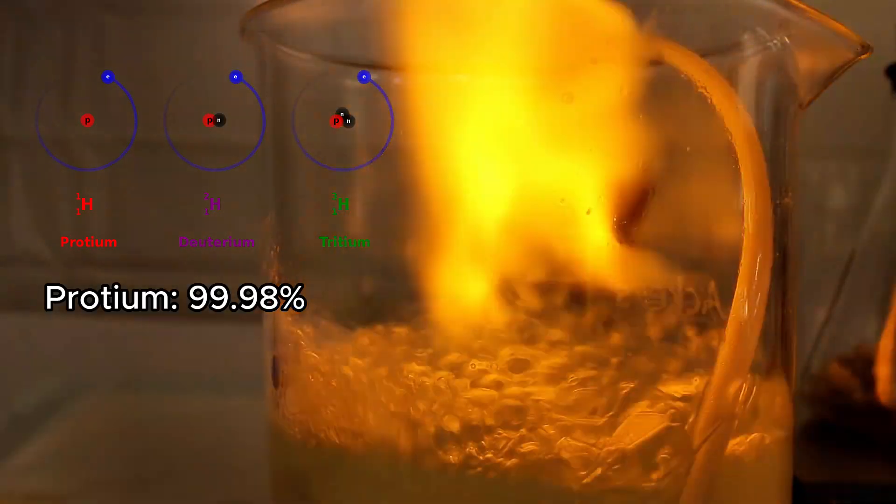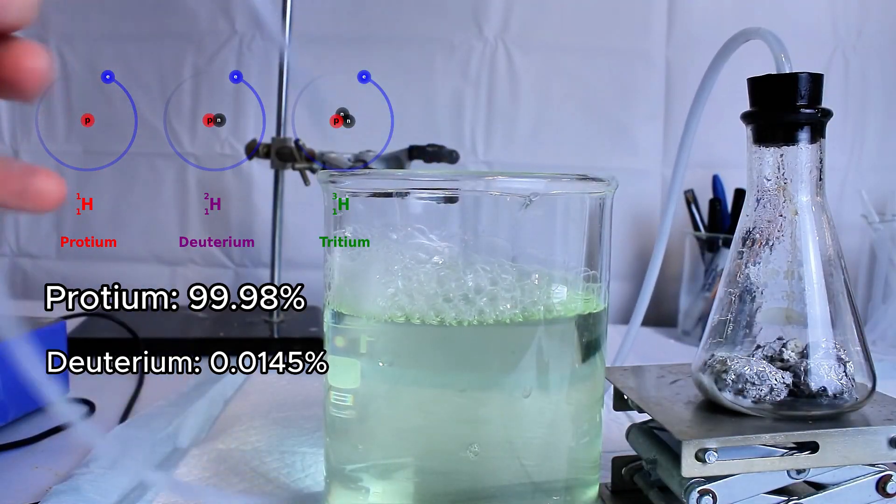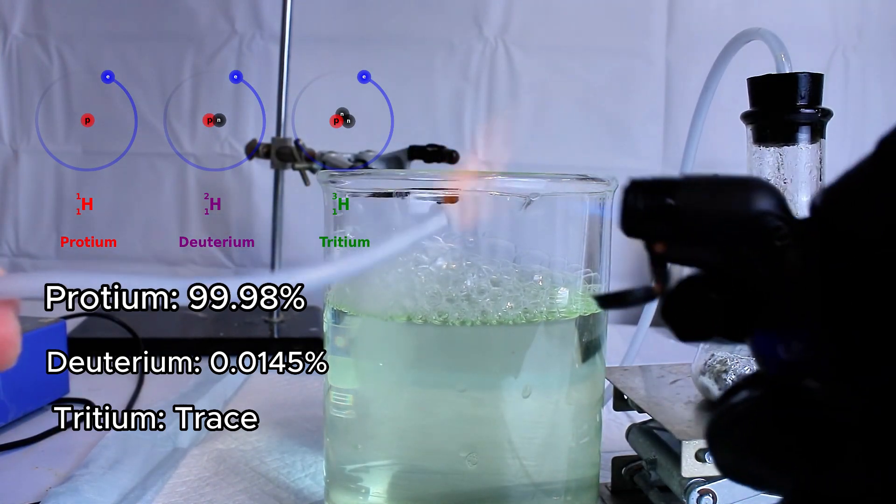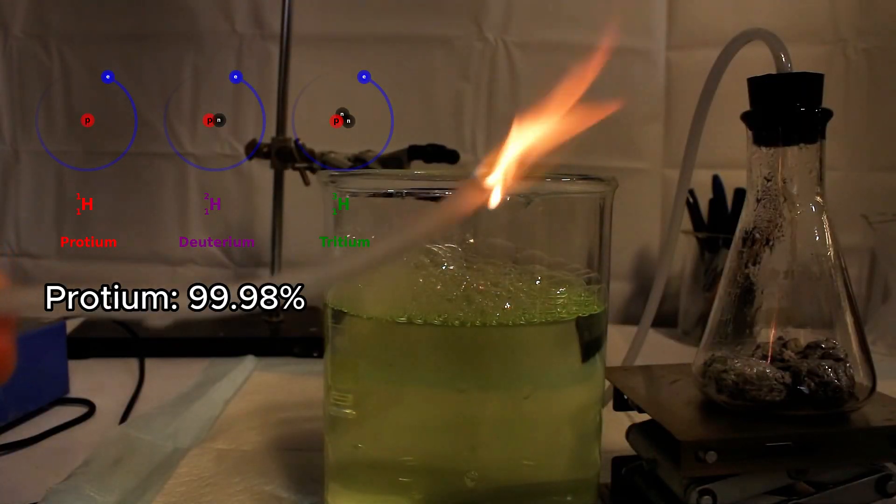On that note, hydrogen naturally exists as three primary isotopes: protium, deuterium, and tritium. And the vast majority of that hydrogen is protium, which exists with one proton, one electron, and no neutrons.